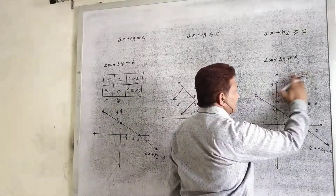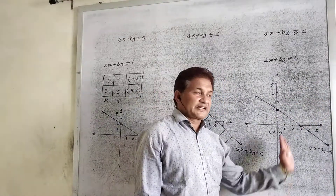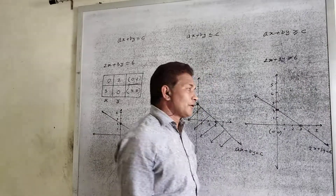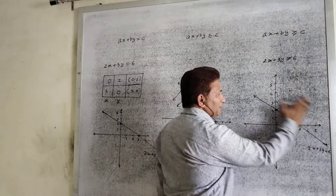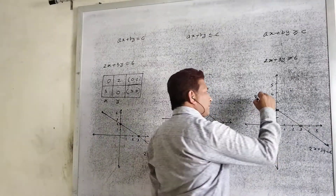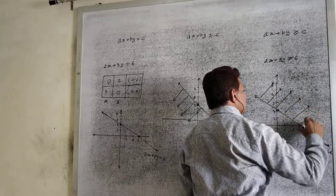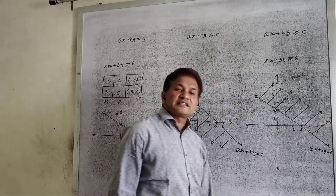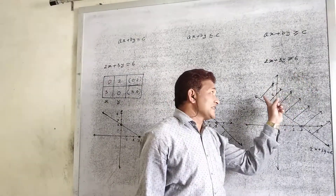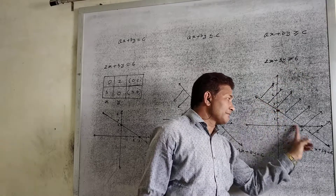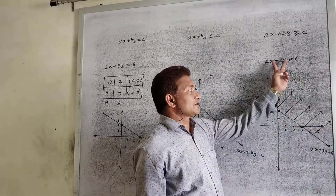Since this point (3, 3) satisfies the given condition, the solution set must be on and above the line. After checking all the points which are above the line, all points above the line satisfy the given equation. Hence the solution set contains all the points above the line as well as the points on the line.